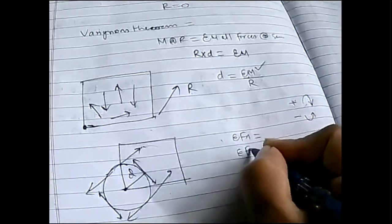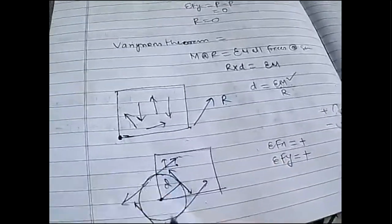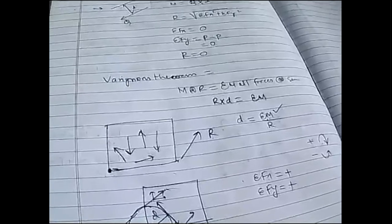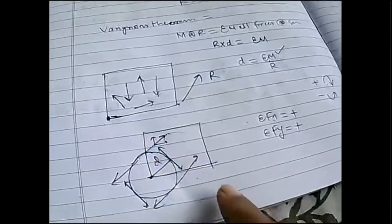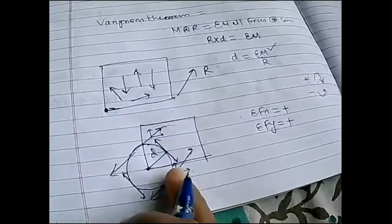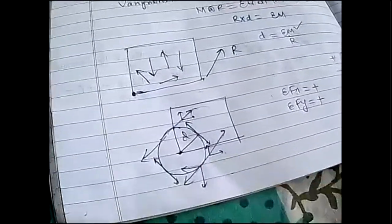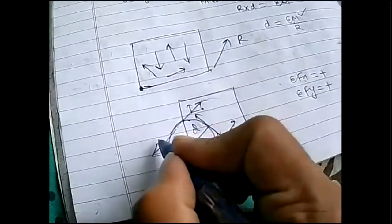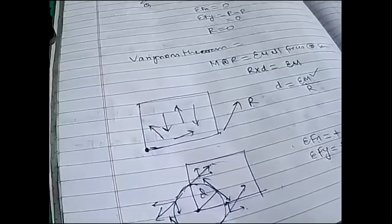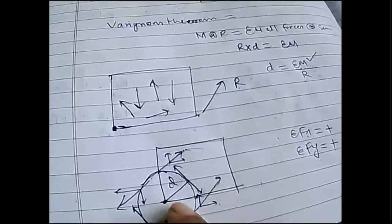After that, concentrate on the signs of ΣFx and ΣFy. If ΣFx is positive and ΣFy is also positive, the resultant is in the first quadrant. If the moment is clockwise and ΣFx and ΣFy are both positive, the resultant is in one specific location. If the moment is anticlockwise and ΣFx and ΣFy are positive, the resultant shifts accordingly. Depending on whether ΣFx and ΣFy are negative or positive in combination with the sign of ΣM, we decide where the resultant acts. From Varignon's theorem we understand the distance of the resultant from a specific point. That's all — happy learning!